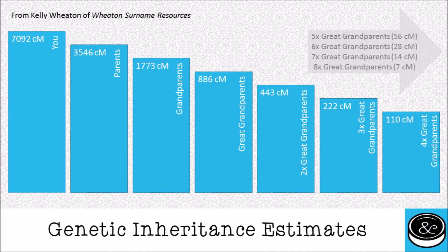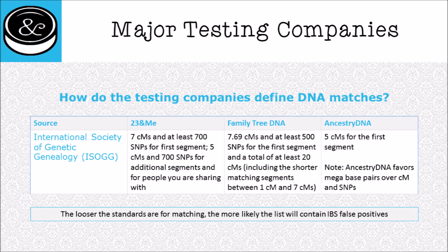This is a genetic inheritance estimate chart — a really cool thing I saw on a blog. Kelly Wheaton over on Wheaton Surname Resources adapted this out of information from another genetic genealogist. All of us are made up of a finite number of centimorgan segments, and as you go further back in your generations these numbers get smaller. As we get back to the seven centimorgan range, you're already dealing with eight-times great grandparents. And as of right now, that is the absolute limit of what an autosomal DNA test can do — if you try to go back further than that, you're dealing with very unreliable information we have not figured out how to analyze effectively yet.